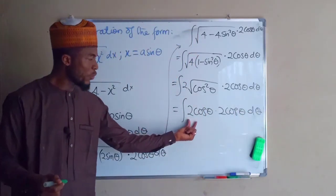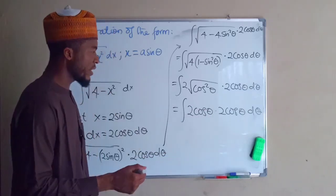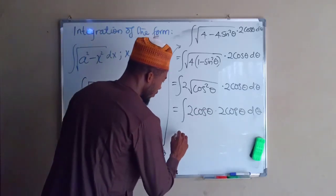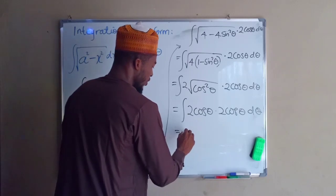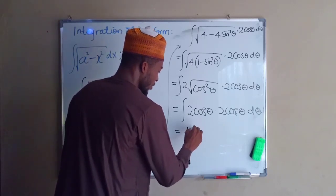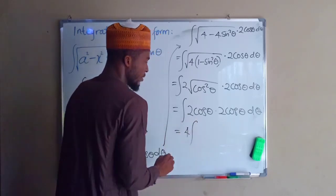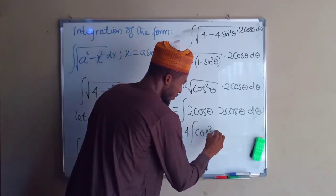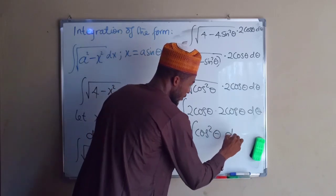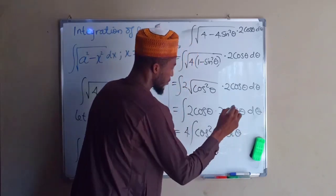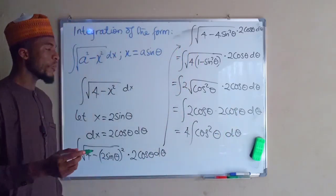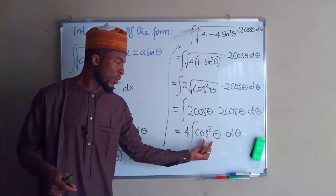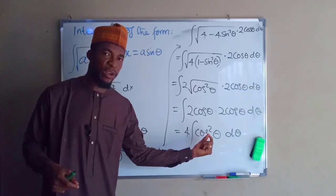The square root of cos squared theta is just cos theta, so we have 2 cos theta times 2 cos theta, which gives 4 cos squared theta. We can factorize 4 outside, leaving the integral of cos squared theta d theta. But how can we integrate cos squared theta?